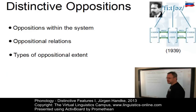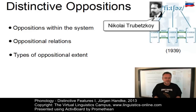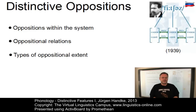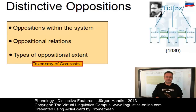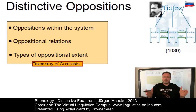The theory of distinctive oppositions goes back to Nikolai Trubetskoy in 1939. It was an attempt at classifying the properties of distinctive contrasts operative in natural languages. Trubetskoy defined a taxonomy of phonological contrasts — that is, of meaning-changing oppositions. There are oppositions within the system, there are relationships between opposite members, and there are types of oppositional extent.